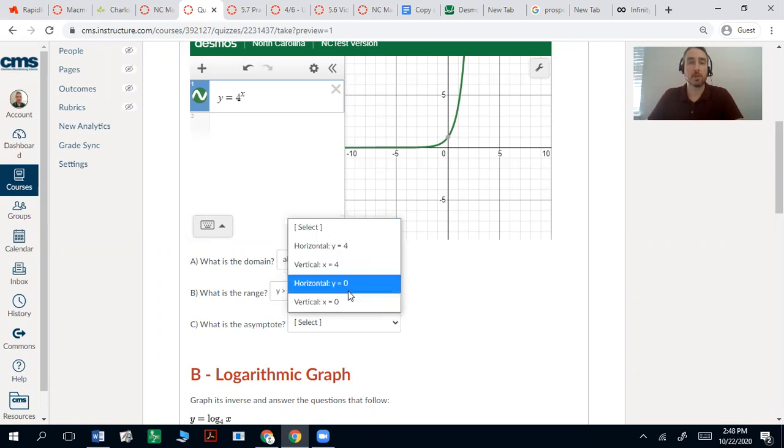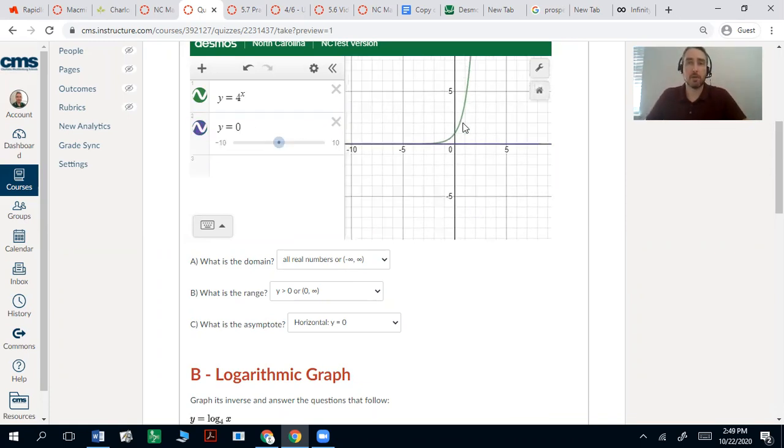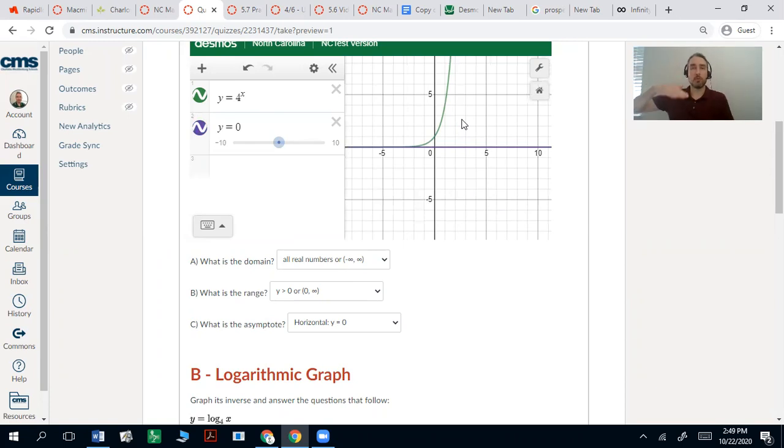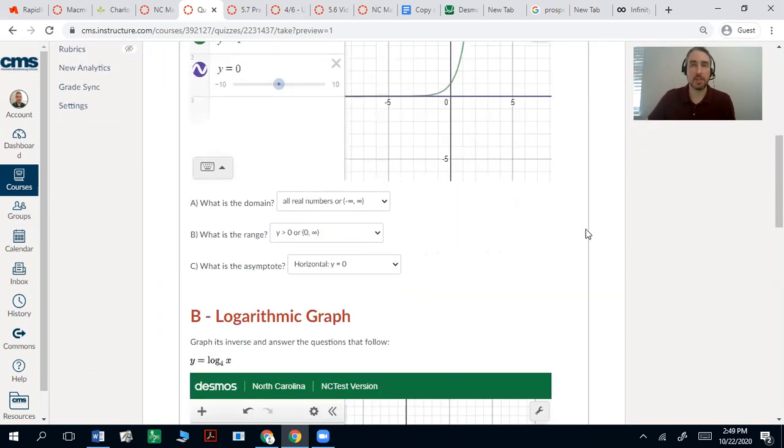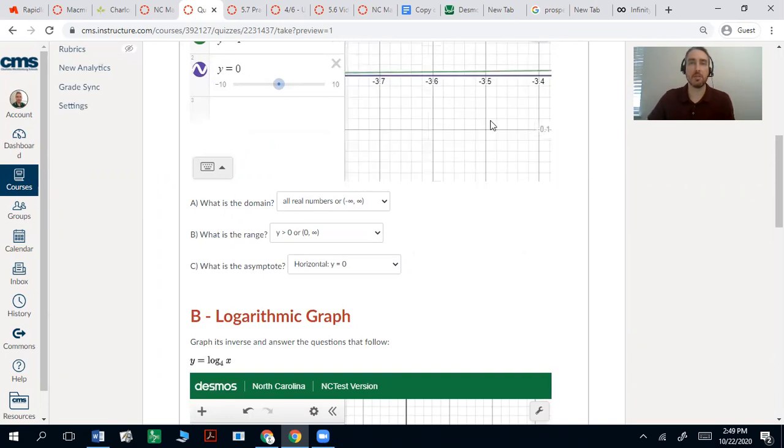So that makes the asymptote horizontal. By graphing y equals zero, you can see that the graph really just approaches that line but ultimately never touches it. So that's my horizontal asymptote.